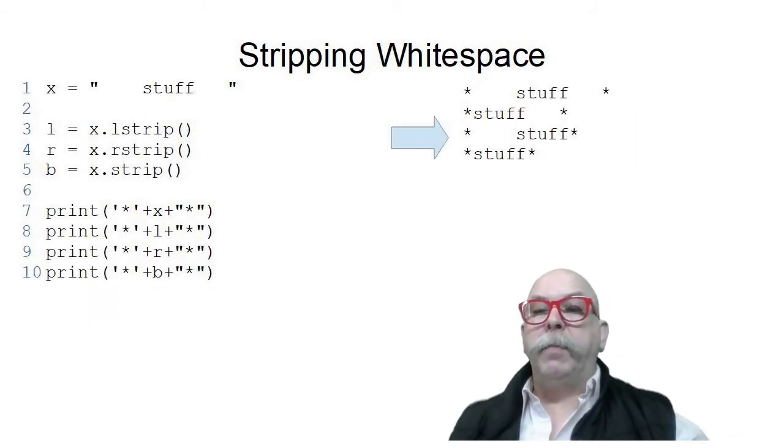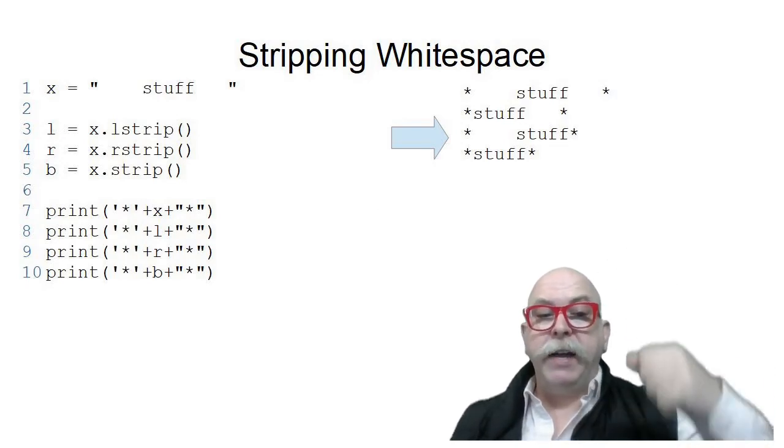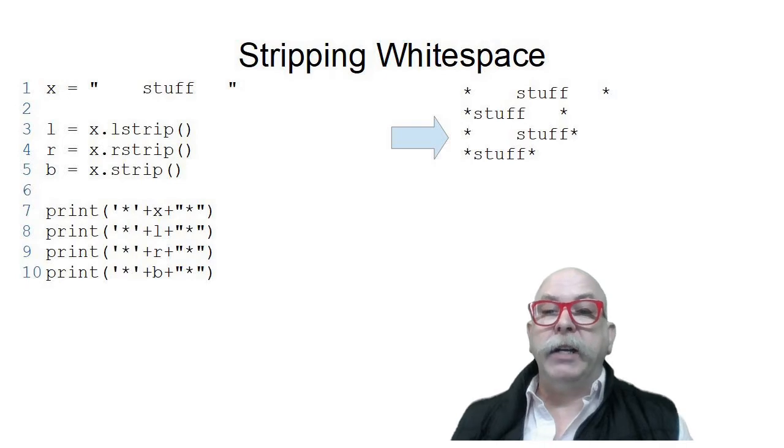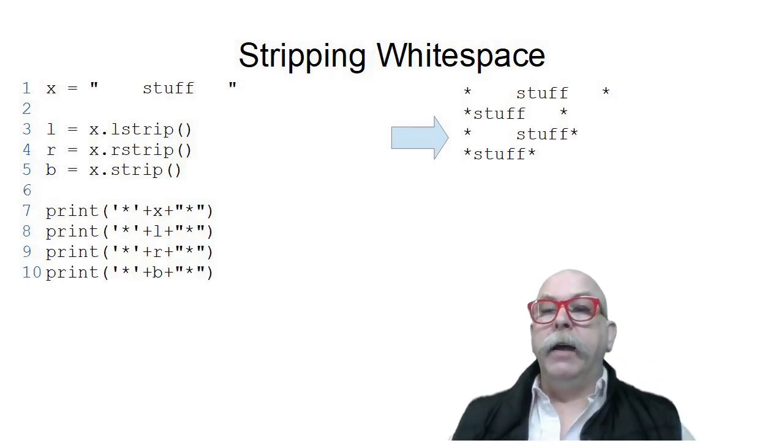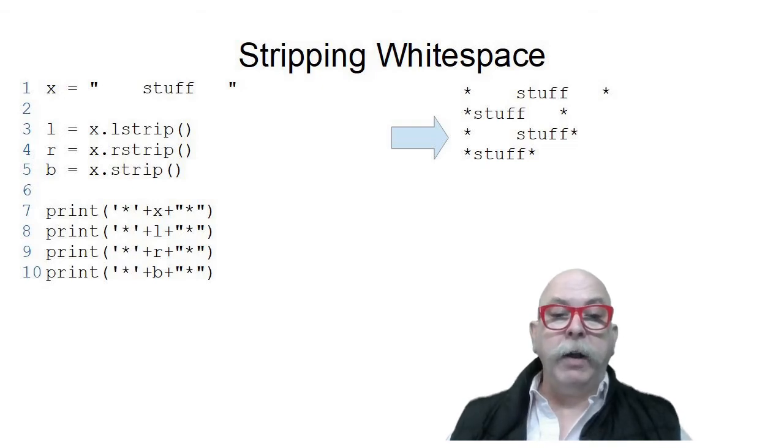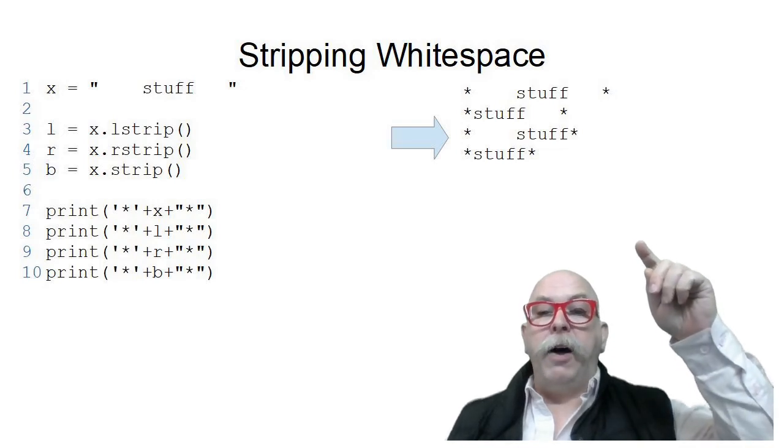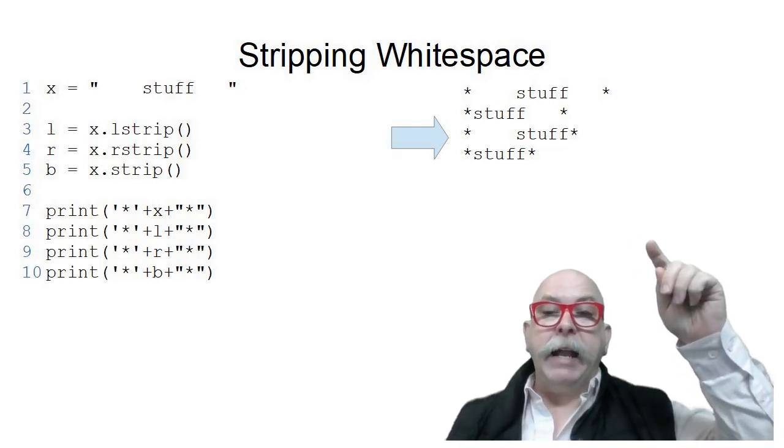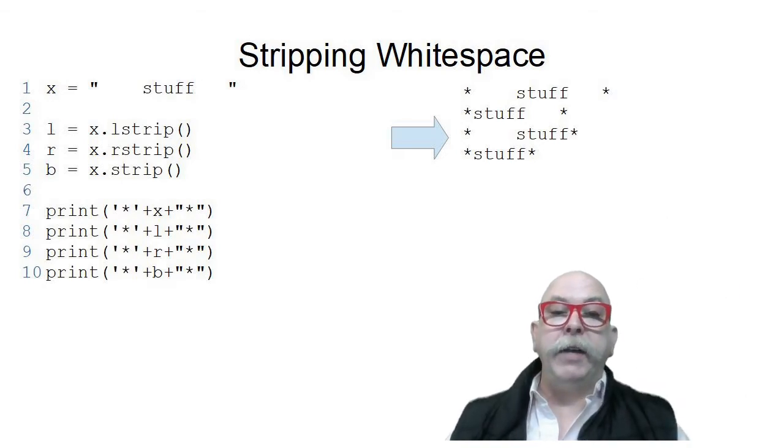We can see here in the program that I have a string with spaces at the front and spaces at the end saved in the variable x called stuff. L would be the lstrip string, R would be the rstrip string, and B would be the strip string where it's stripped from both. You can see that by default, star concatenated to the variable x concatenated to a star shows the whitespace on both ends.